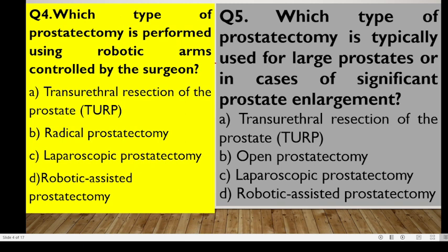Number four: which type is performed using robotic arms controlled by the surgeon? That is robotic-assisted prostatectomy. Number five: which type is typically used for large prostate or cases of significant prostate enlargement? If we used TURP, we would only remove the inner part. For significant enlargement, we need to remove a large amount of tissue, so this would be an open prostatectomy, which provides enough space to remove the significantly enlarged prostate tissue.